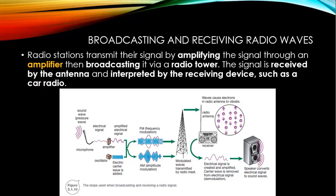Radio stations transmit their signals by amplifying the signal through an amplifier, then broadcasting it via a radio tower. The signal is received by an antenna and interpreted by the receiving device such as a car radio. The illustration shows sound waves going into a microphone, which converts it into an electric signal going into an amplifier. That amplifier transmits the signal to a radio tower, which then transmits the radio signal to a receiver like a radio, transforming the electrical signal back into sound through a speaker.